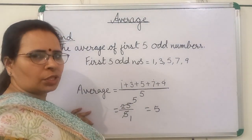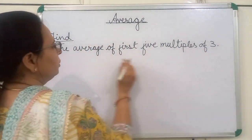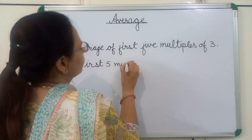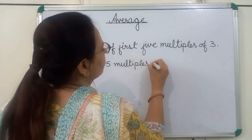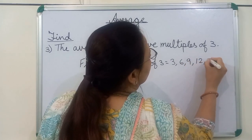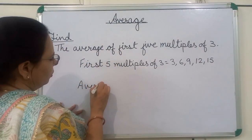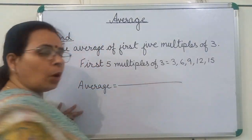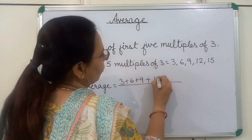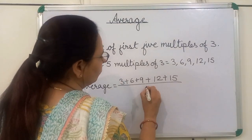Now, we will see the third question: find the average of first 5 multiples of 3. First, we will write the first 5 multiples of 3: 3, 6, 9, 12, and 15. Now, we will find the average of these numbers. Average is equal to sum of numbers upon sum of addends. How many addends are here? 5. We will write here 5.